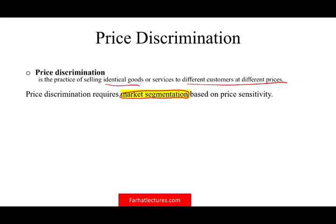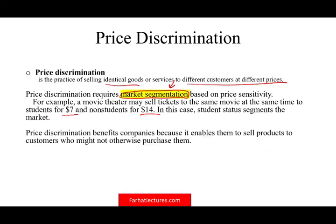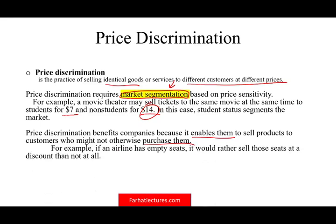For example, a movie theater might sell tickets to students for $7 and non-students for $14. This makes sense — students don't have a lot of money, so they lure them by offering a discount, and once they're used to going to the theater they'll keep going. That's legitimate market segmentation — not discrimination based on gender, color, race, or religion.